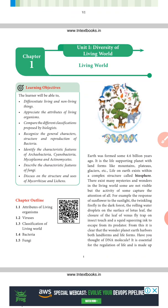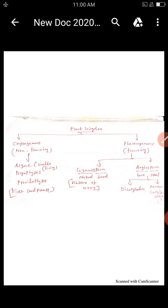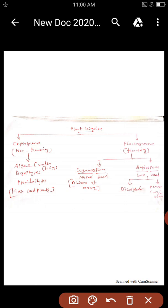The earth was formed approximately 4.6 billion years ago. This is the biosphere. The kingdom of the plants — the entire world is divided into living things and non-living things.